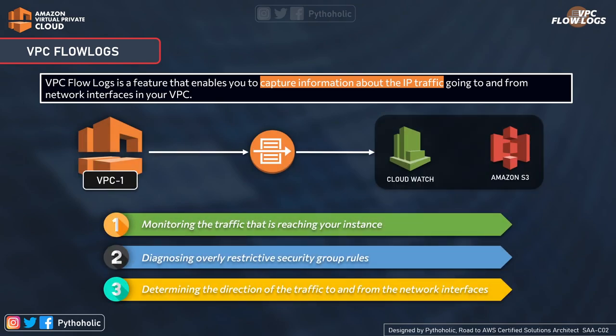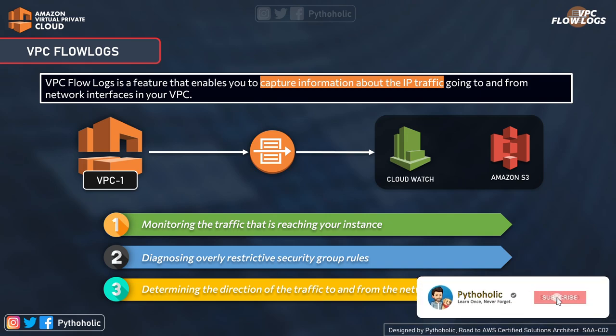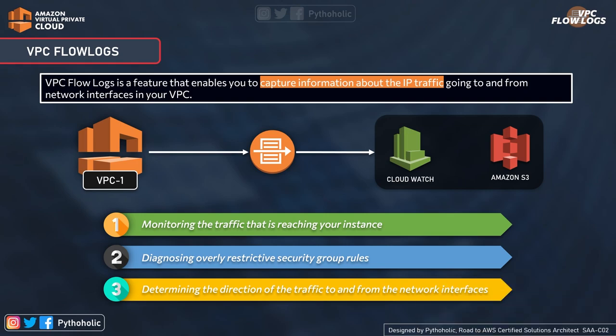VPC flow logs is a feature that enables you to capture information about the IP traffic going to and from the network interfaces in your VPC. Remember this carefully — when you read 'feature,' think of having an option to switch it on or off for a service. You can publish the flow log data to Amazon CloudWatch Logs or Amazon S3, so if you wish to see the logs, you go to either of these services.